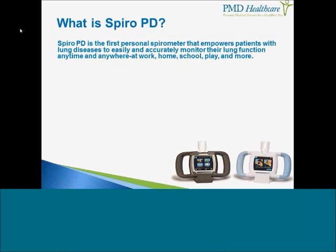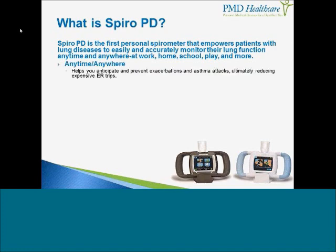SpiroPD is truly the world's first most personal spirometer. It empowers patients with lung disease to easily and accurately monitor their lung function anytime and anywhere. Whether you're at work, home, or school, maybe you're wondering if your child should participate in a soccer game later on today, you can monitor your lung function and be able to tell the severity of the condition right at a glance. SpiroPD will also show you if you're having a decline in lung function before you actually begin to feel symptoms. This will help you anticipate and prevent exacerbations and asthma attacks, ultimately reducing those expensive ER trips.